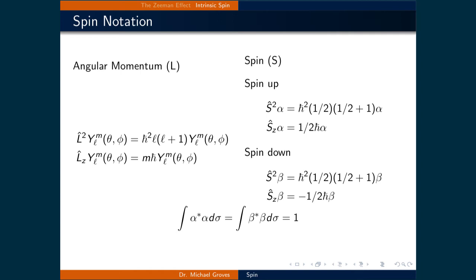Beta represents a state where the electron is spin-down. This means we get the same value as with alpha when S-squared is applied, meaning that the total intrinsic spin is the same, while the Z-component is now negative h-bar over two. Alpha and beta are normalizable over all spin states, which is what the two integrals at the bottom are representing.